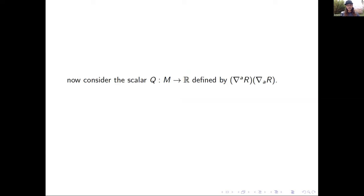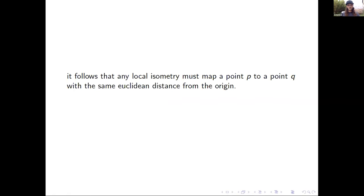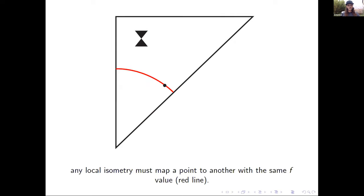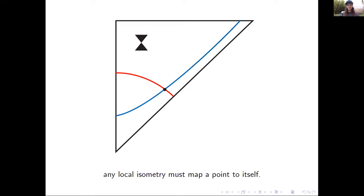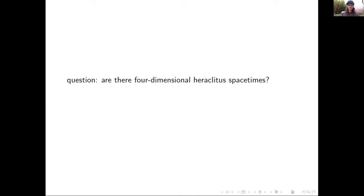We construct a different scalar Q, formed by taking covariant derivatives of R and contracting with the inverse metric. One can show that Q is proportional to both R and F squared. It follows that any local isometry must map P to a point Q with the same Euclidean distance from the origin — constrained to the red line. Taking these two constraints together, if there's a local isometry, you are forced to map the point to itself, for every point in the spacetime. Hence the spacetime is Heraclitus.